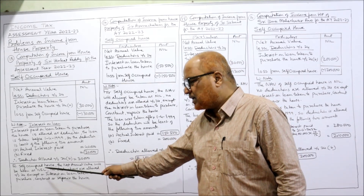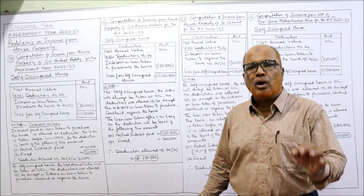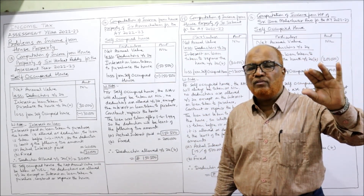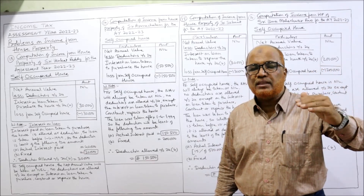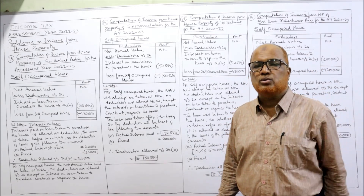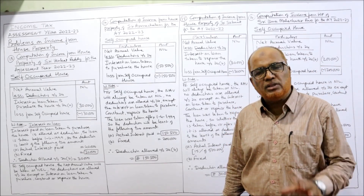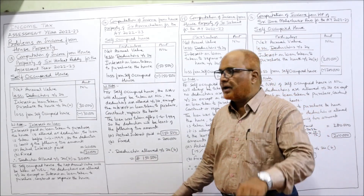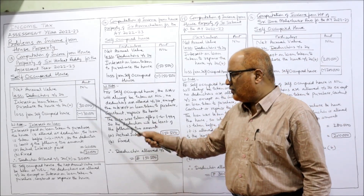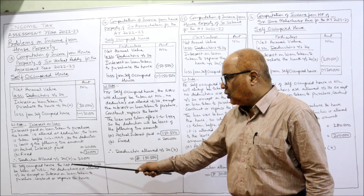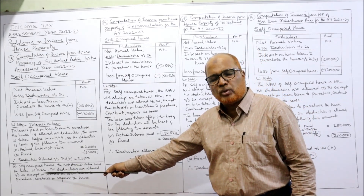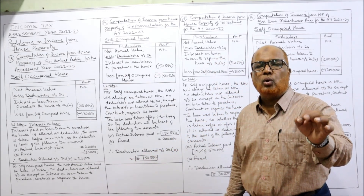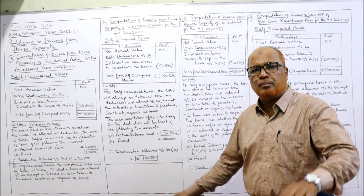For a self-occupied house, the NAV will always be taken as nil. We will not start from GAV — GAV calculation starts only when the assessee has let out the house. Here it is self-occupied, so NAV will always be nil. No deductions are allowed under Section 24 except one — interest on loan taken to purchase, construct, or repair the house.